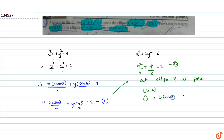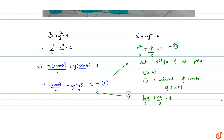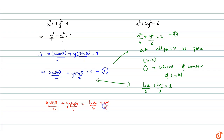So equation number 1 becomes the chord of contact of (h, k). We can write it as hx/6 + ky/3 = 1. Both equations represent the same line, so we equate: x·cosθ/2 + y·sinθ = hx/6 + ky/3.